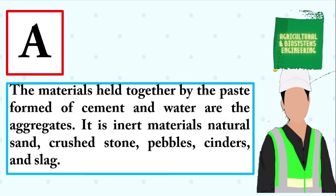The materials held together by the paste formed of cement and water are the aggregates. It is inert materials — natural sand, crushed stone, pebbles, cinders, and slag.